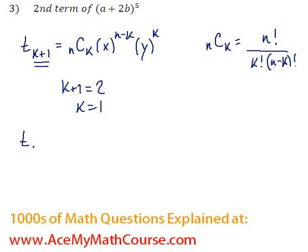Alright, so t₂ equals 5C1, where 5 is the n and 1 is the k,